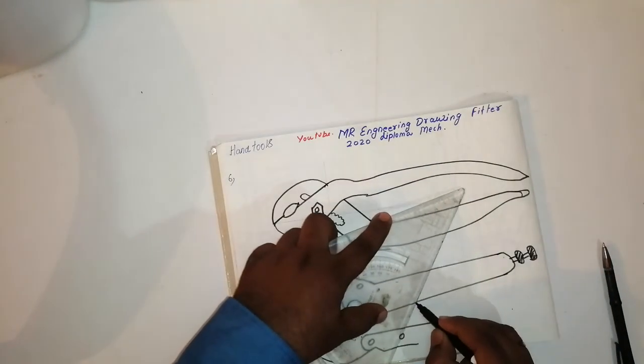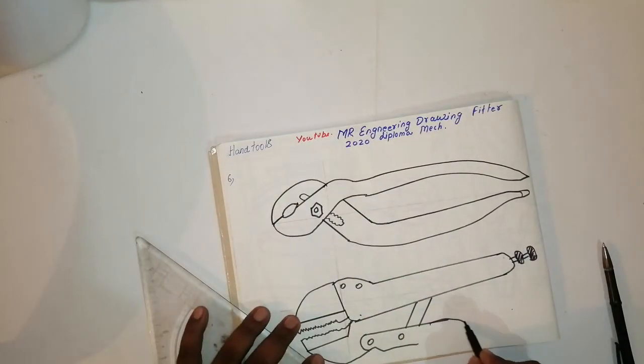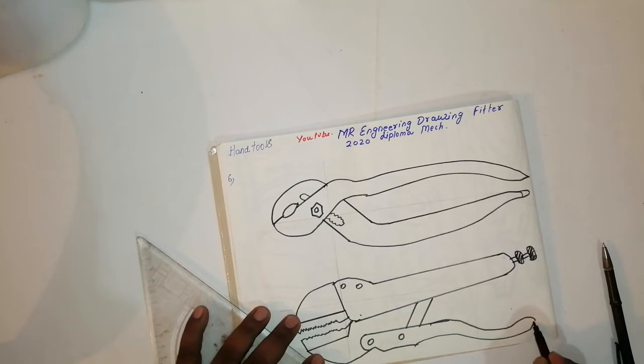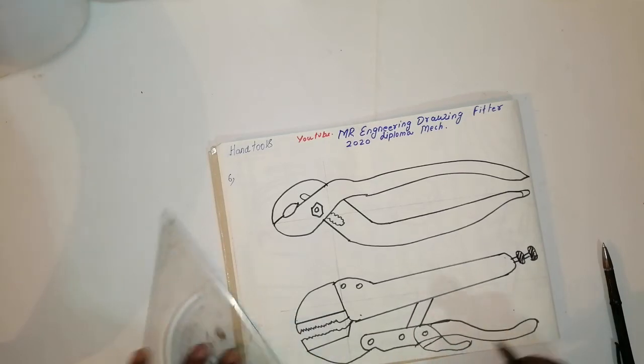Then this portion will join like this. Then this handle will come like this. Then one more handle will come like this. This will become like a gripper. You can like this video, put it to your friends, and comment.